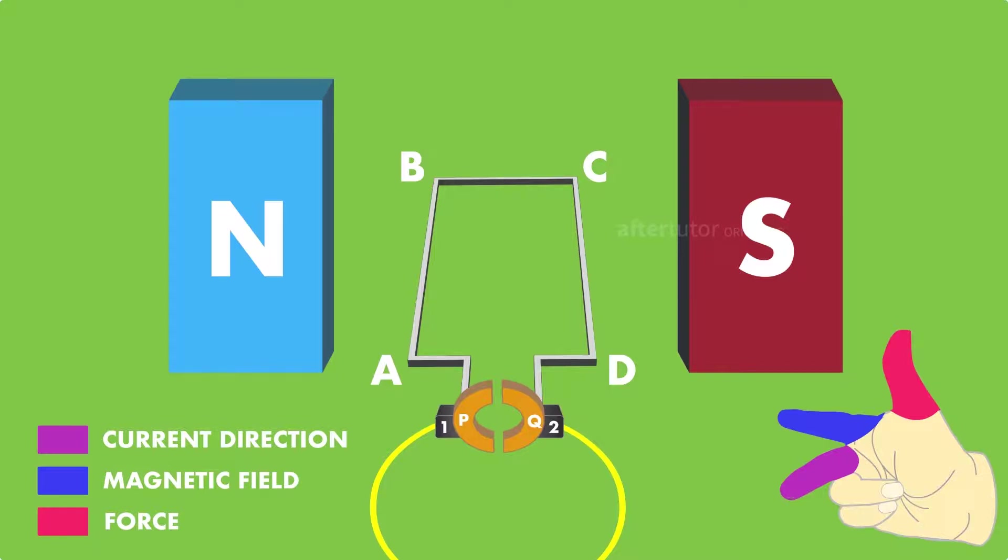Similarly, for the arm CD, the force moves downwards, and according to the rule, the current moves from C to D. And the induced current moves from ABCD.